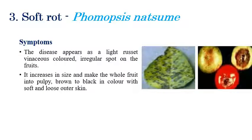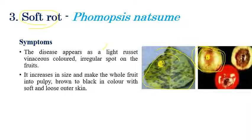The third disease is soft rot, caused by Phomopsis natsumei. As the name indicates, it involves softening and rotting of berries or fruits. The disease initially appears on leaves as irregular spots, and the same irregular spots can also be seen on fruits. The small spots increase in size and in later stages cover the entire leaf and fruit including the pulpy regions, turning brown to black in color with softening and rotting of tissues.